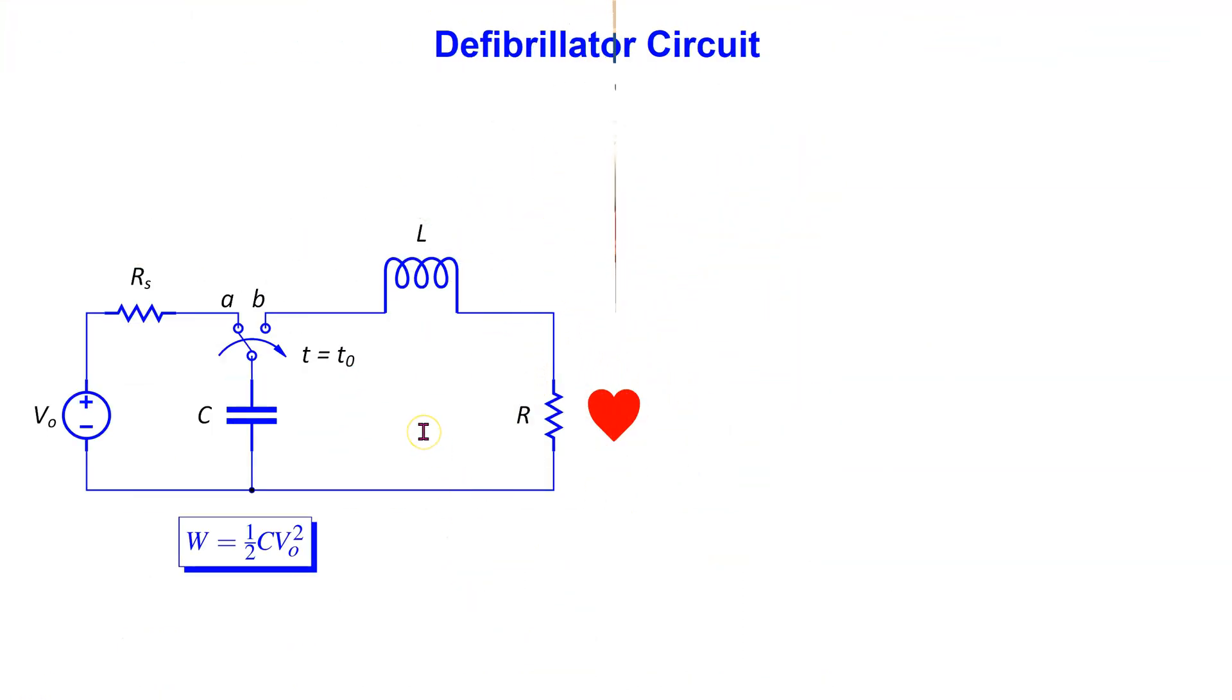A typical defibrillator circuit is shown here. It includes a power supply, a capacitor, and an inductor. The patient is modeled as a resistor. The power supply can be the main supply or a battery.